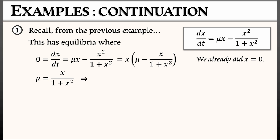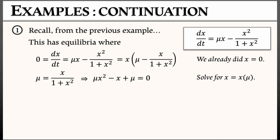Multiplying through both sides by 1 plus x-squared, we get mu*x-squared minus x plus mu equals zero. Solving for x as a function of mu using the quadratic formula, we get 1 plus or minus square root of 1 minus 4*mu-squared, all over 2*mu.